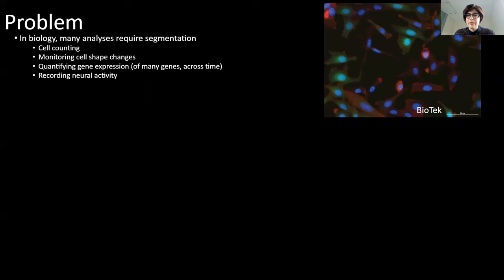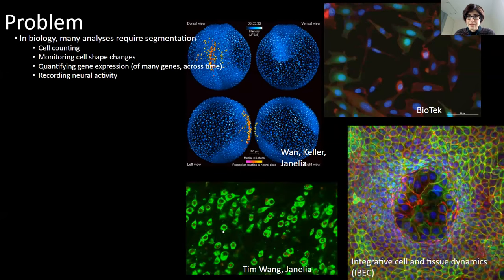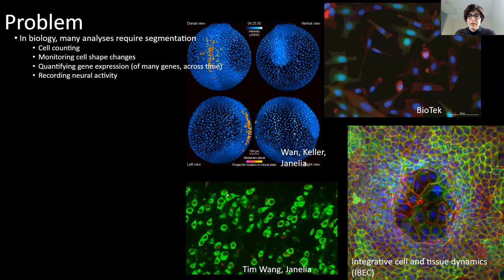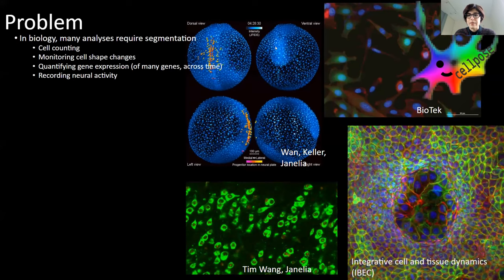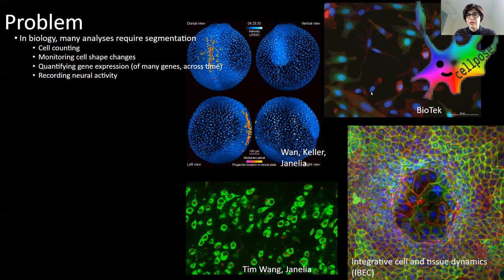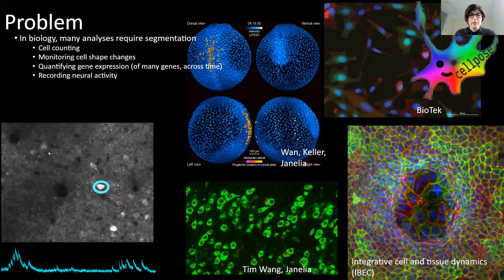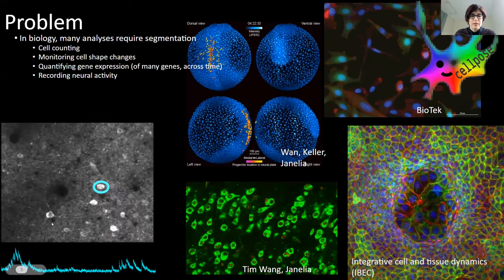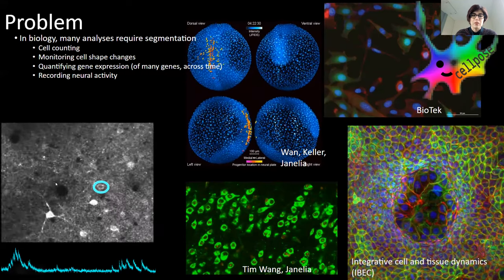Here are examples of the diversity of different cells people record from. One example is data from Tim Wang used for RNA in situ experiments, where the next step after segmentation is figuring out where the RNA dots are — a gene expression example. CellPose was developed to cover all these use cases so you don't have to make a new model every time you encounter a new cell type.